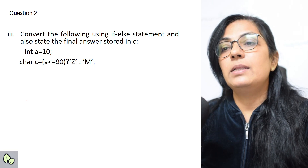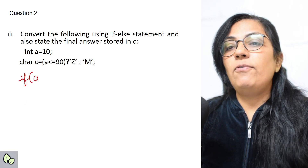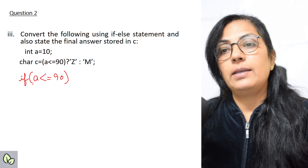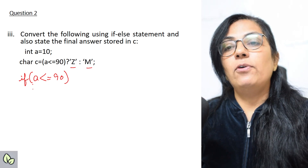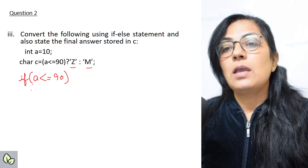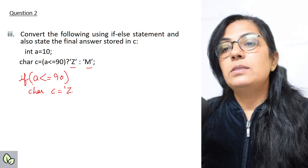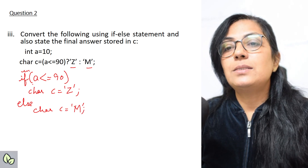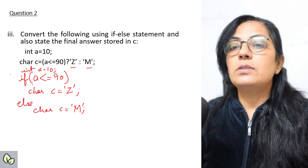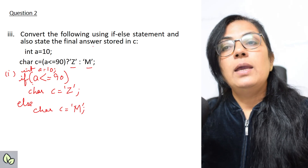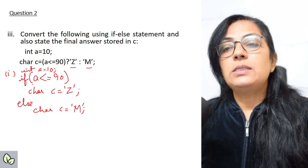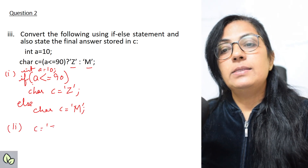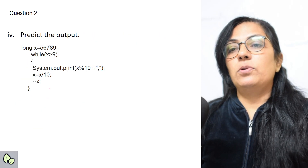Convert the ternary expression into if-else where the final answer is stored in c. If a <= 90, write the if condition, assign c = 'Z' for true and c = 'M' for else. Also write int a = 10. Since a is 10 and 10 <= 90, the condition is true, so the value of c will be 'Z'.